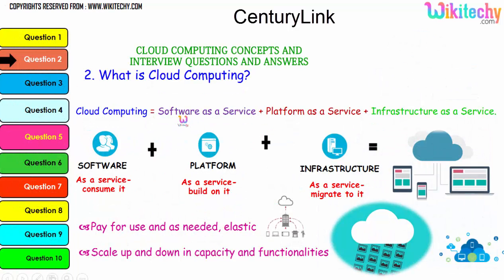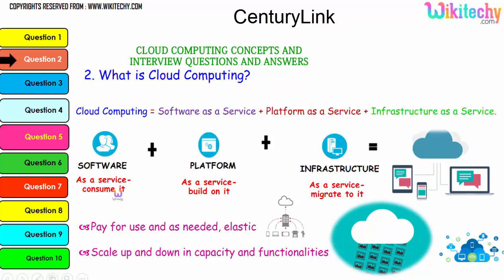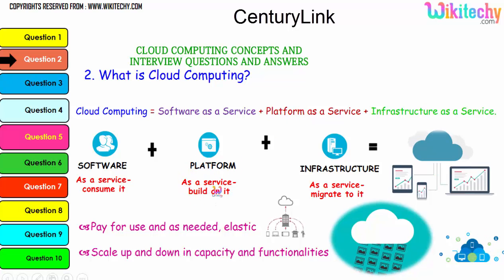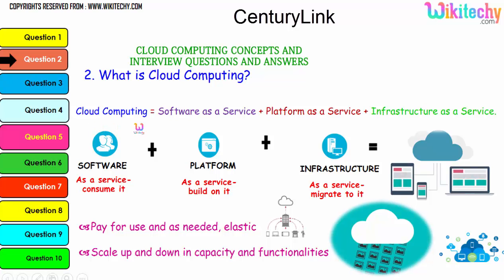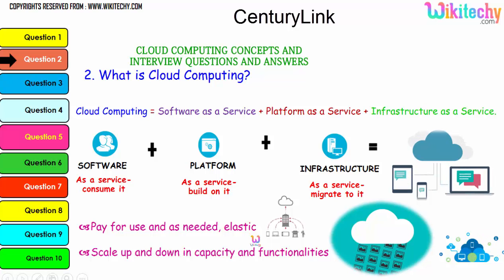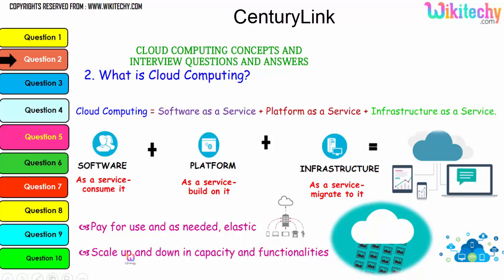Cloud computing consists of Software as a Service, Platform as a Service, and Infrastructure as a Service. The collaboration of software, platform, and infrastructure is referred to as cloud computing. A major advantage is pay-for-use as needed and elasticity — if you need minimal storage, pay for that; if you need bigger storage, pay for that. You can scale up or down in capacity and functionality.